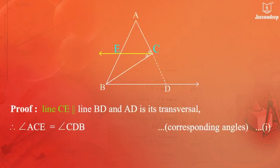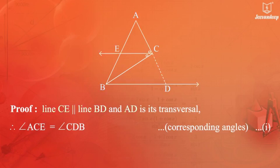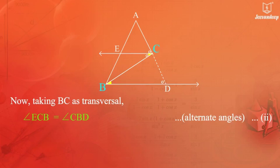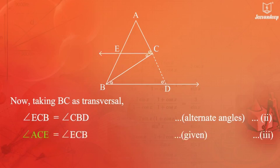Proof: Line CE is parallel to line BD, and AD is its transversal. Therefore, angle ACE equals angle CDB, being corresponding angles (Equation 1). Taking BC as transversal, angle ECB equals angle CBD, being alternate angles (Equation 2). CE is the bisector of angle ACB as given, therefore angle ACE equals angle ECB (Equation 3).